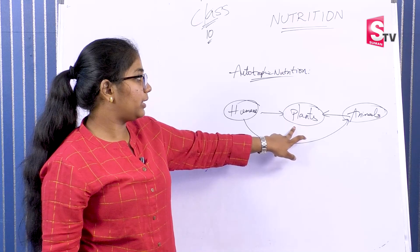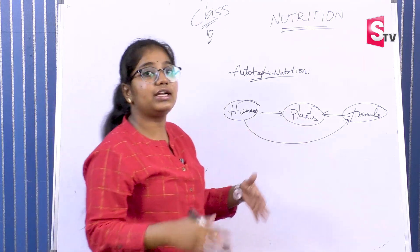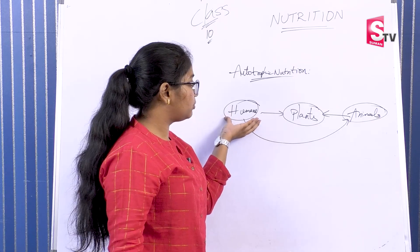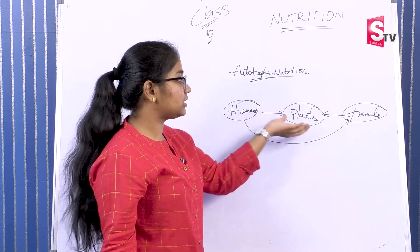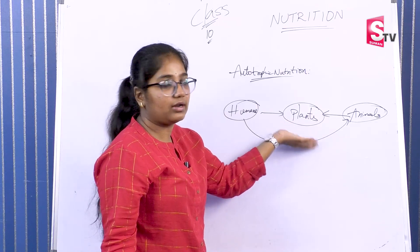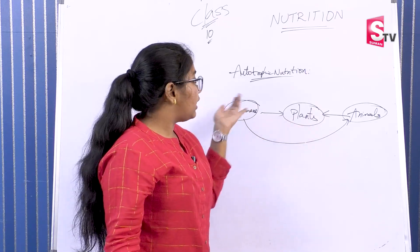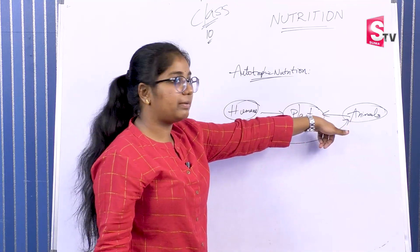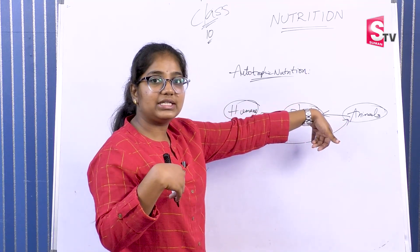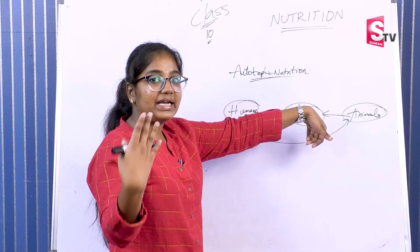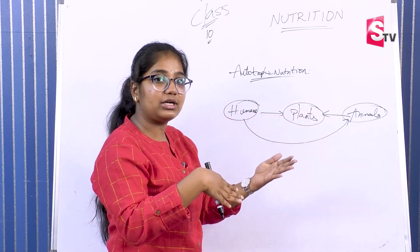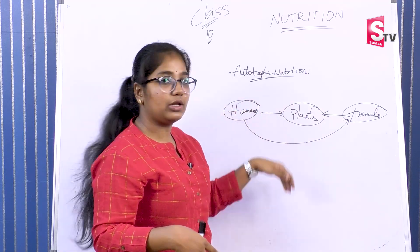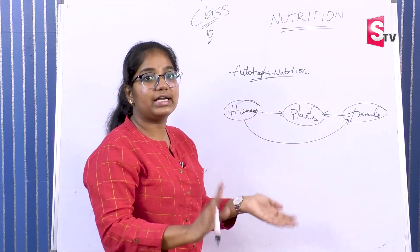Vegetarians only eat plants and plant-based things. Non-vegetarians eat meat, but those animals also depend on plants. So all humans depend on plants, directly or indirectly.